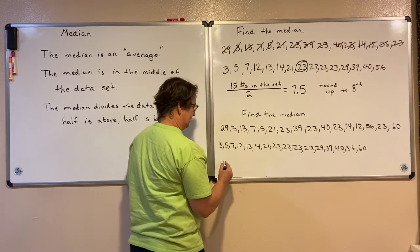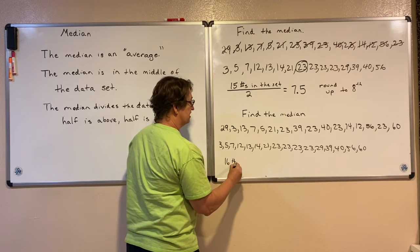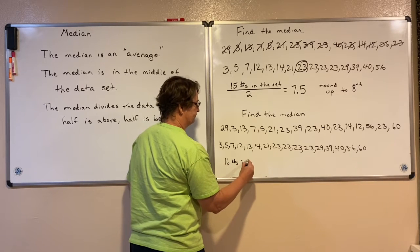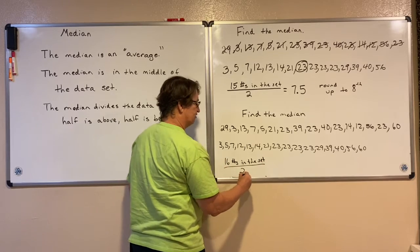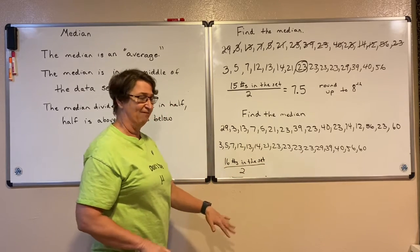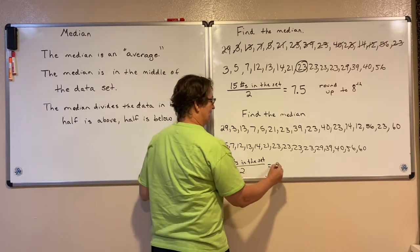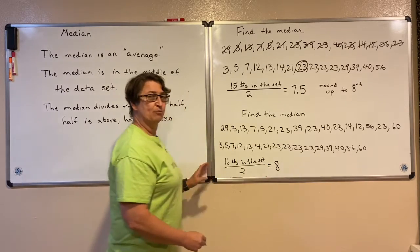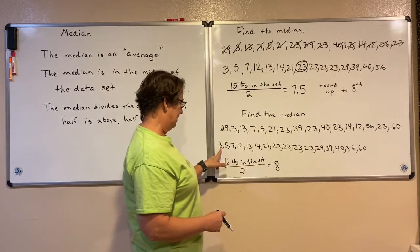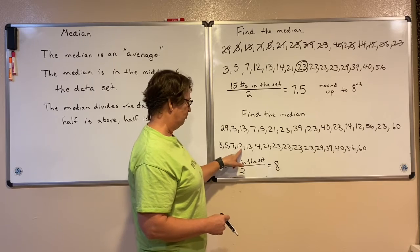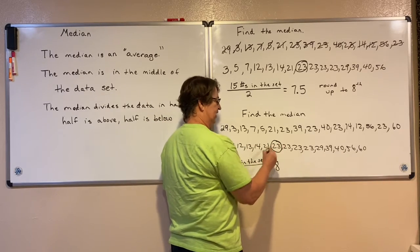I'm going to do the same trick to figure out which one is my median. If I have 16 numbers in the set, I'm going to divide that by 2, because again I'm splitting my numbers in half — half on one side, half on the other. 16 divided by 2 is 8. So I'm going to go to the 8th one: 1, 2, 3, 4, 5, 6, 7, 8 — the 8th one is here.